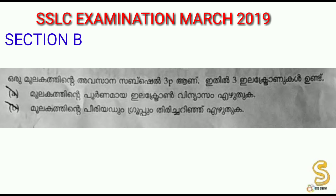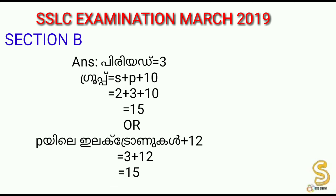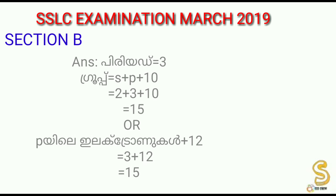The third subshell is 3s², 3p⁶. We can add the group number. Instead of the third subshell, we add a group. The group number is calculated as 2 plus 3 equals 5, plus 10 equals 15. This is the group number.